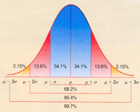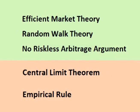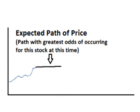Volatility is used to form a range around the expected path for price to create a continuous range of probability for what the actual rate of change in price will be. By combining some basic assumptions about the markets with some basic laws and theories of statistics, we can develop an expected path for price — the path that has the greatest odds of occurring. Even though we know price probably will not follow that path, it is the path that has a better chance of occurring than any other path. Therefore, we call it the expected path for price.